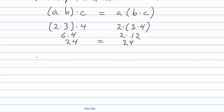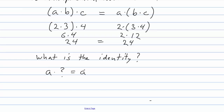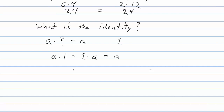What about the identity element for multiplication? We need some integer such that multiplying any integer a by it gives a back. That's easy — it's 1. One is an integer, and a times 1 equals 1 times a equals a. For example, negative 3 times 1 is negative 3. So 1 is the identity element for multiplication.